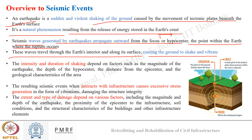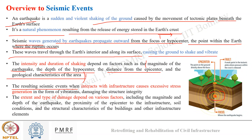There are three major points: the focus or hypocenter, where the earthquake begins; the epicenter, the first point of interaction of the earthquake at ground level; and the fault line, the line along which movement is maximum — within a weak point in the tectonic plate where pressure within the crust is released. The intensity and duration of shaking depends on factors such as the magnitude of the earthquake, depth of the hypocenter, distance from the epicenter, and the geographical characteristics of the area.